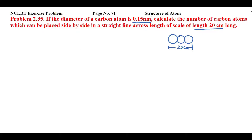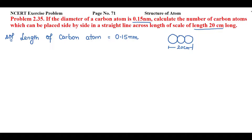First, we will convert the length of the carbon atom into centimeters. The length of the carbon atom is 0.15 nanometer, and we have a total length of 20 centimeters. To apply the unitary method, we convert 0.15 nanometer into centimeters. Since 1 nanometer equals 10 raised to power minus 7 centimeter, we get 0.15 into 10 raised to power minus 7 centimeter.